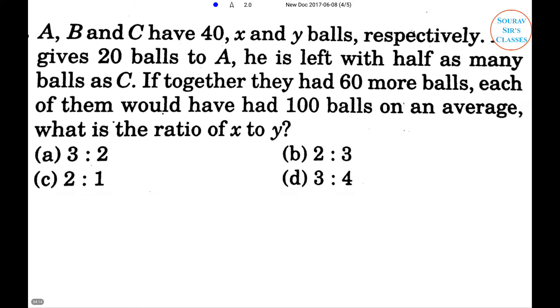Now according to the first condition, x minus 20 equals y by 2, that implies 2x minus y equals 40, put it number one. According to the second condition, 40 plus x plus y plus 60 equals 100 times 3, that implies x plus y equals 200, put it number two.